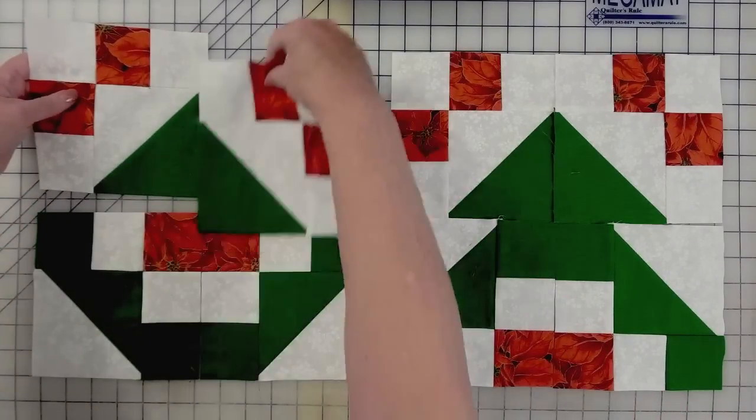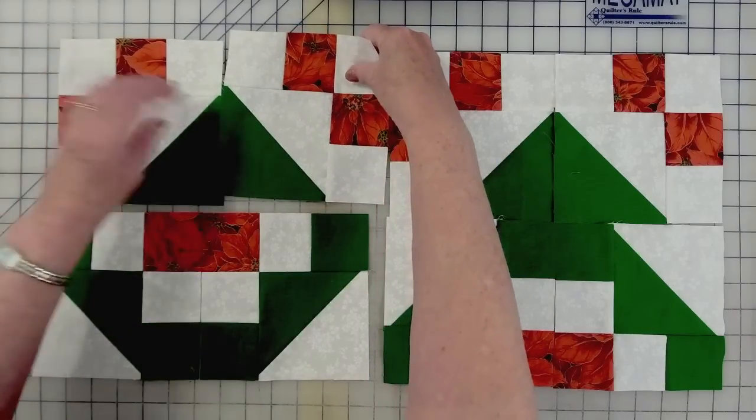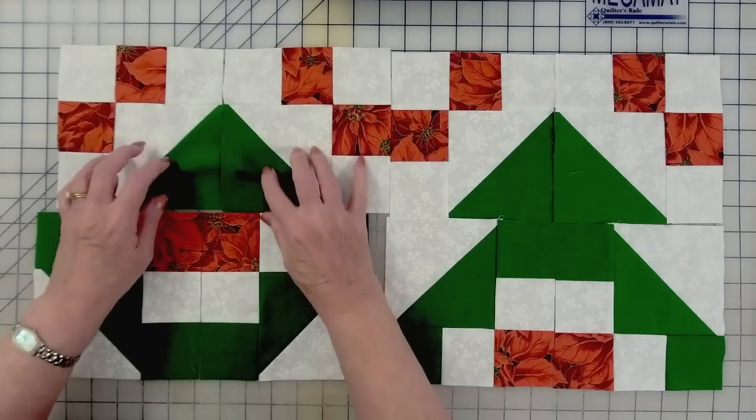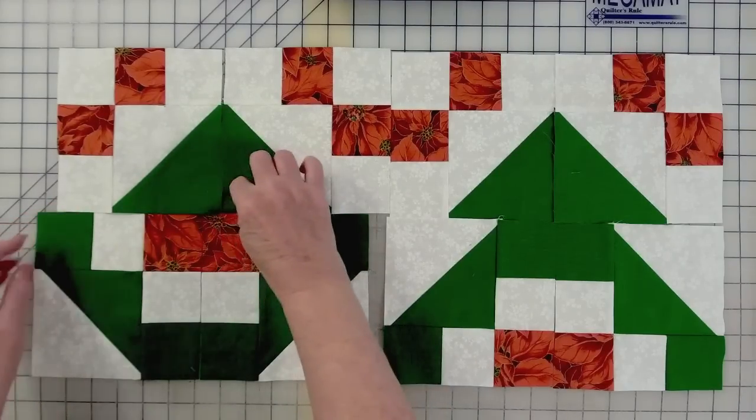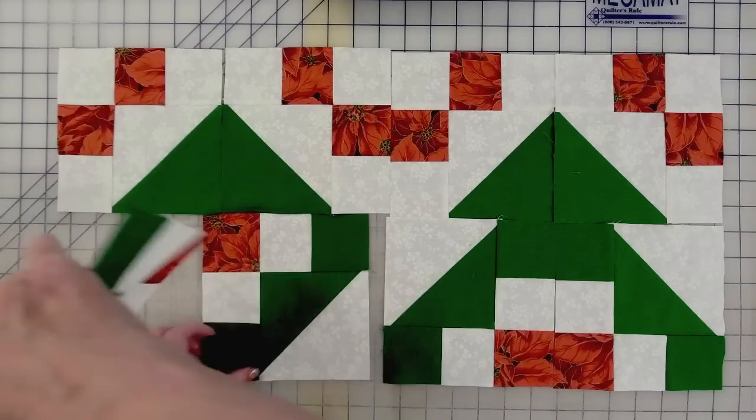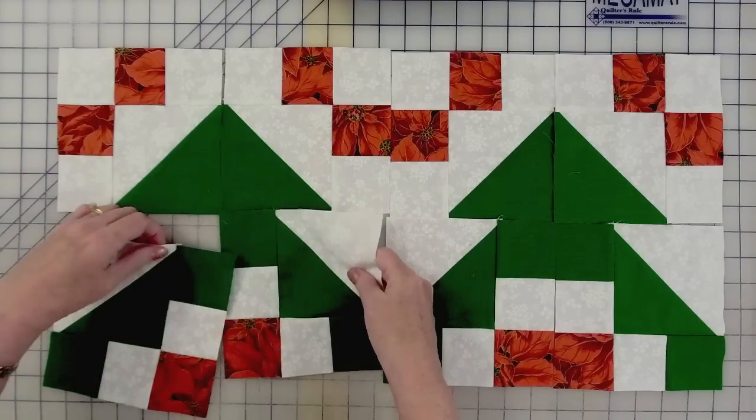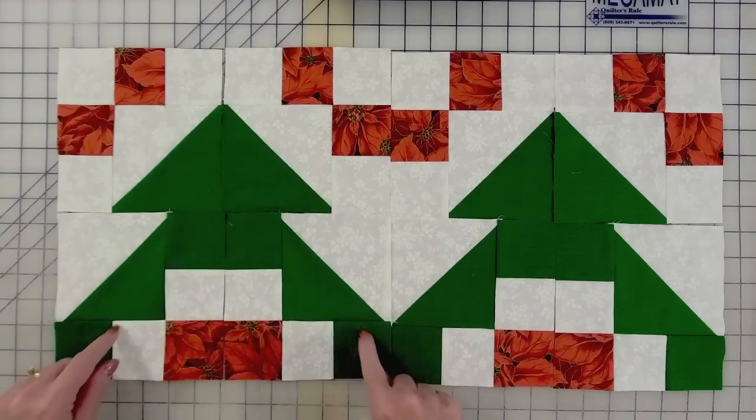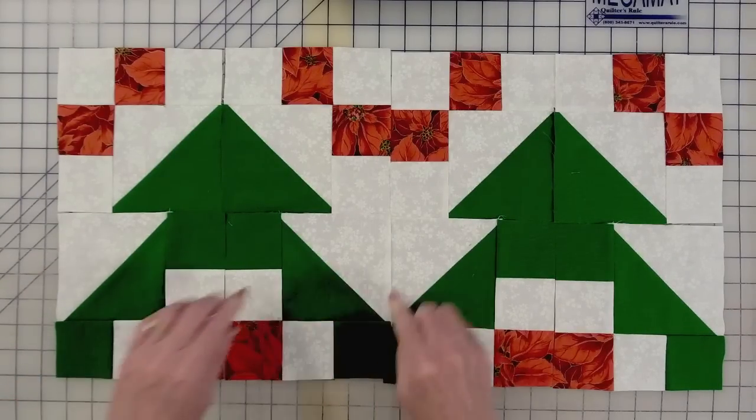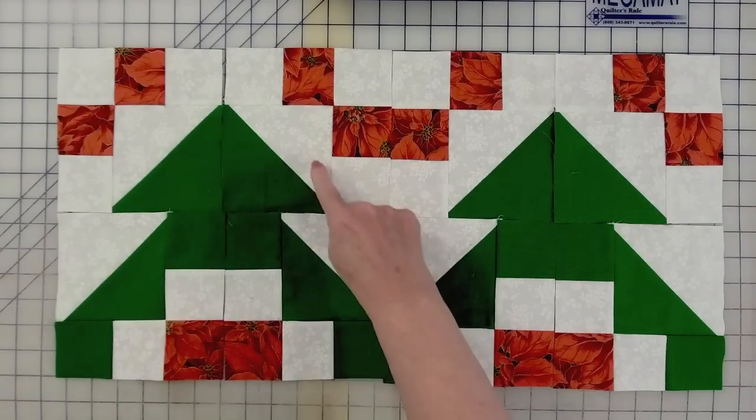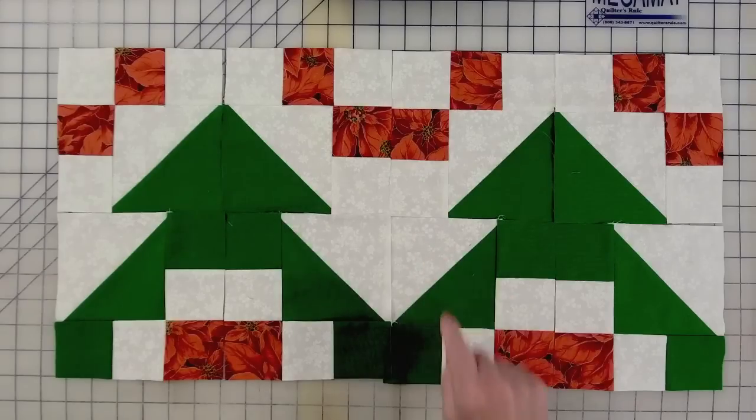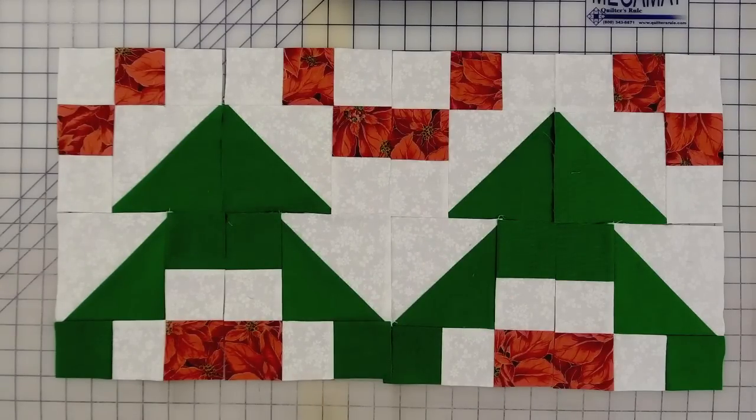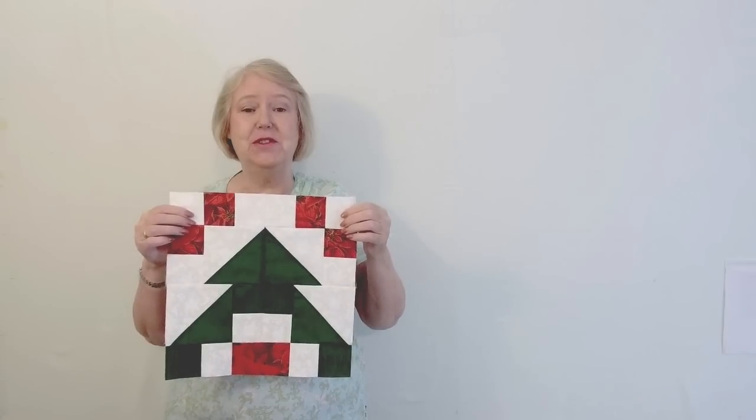And we're going to make a second block here. So we have the negative pieces, the two green ones to form the top of the tree. Then we turn this around. So now we have two Christmas trees. And if you notice, we have a white Christmas tree that's upside down.